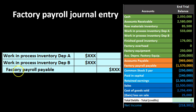The journal entry for labor debits Work in Process — Department A and Work in Process — Department B, and credits Factory Payroll Payable. This is essentially a simplified payroll journal entry without withholdings or payroll taxes — just showing the capitalization of labor costs into work in process rather than expensing them.